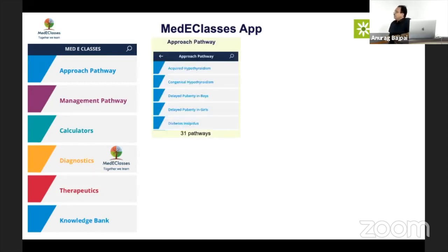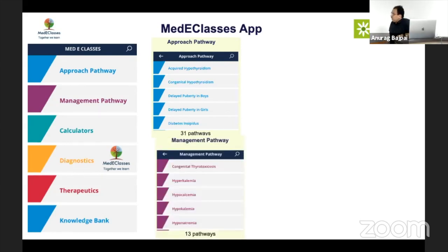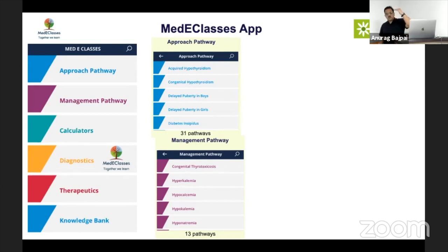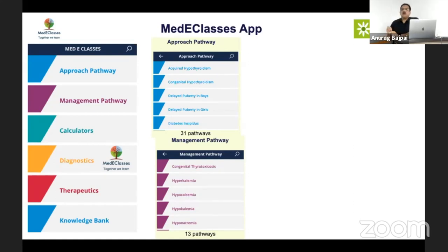We have 31 approach pathways which basically cover every condition you will encounter as a pediatric endocrinologist. We have around 13 management pathways which cover the range of possibilities, and when you look at these pathways they appear simple but are actually very complicated algorithms with various weighted edges given to different situations.